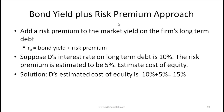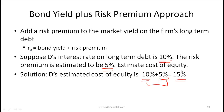The bond yield plus risk premium approach is the third method. You simply add a risk premium to the market yield on the firm's long-term debt. For example, if company D's long-term debt yield is 10% and the risk premium is 5%, then the cost of equity is 10% + 5% = 15%. Note this 5% risk premium is specific to the company's common stock over its own bonds, and is different from the market risk premium used in CAPM.